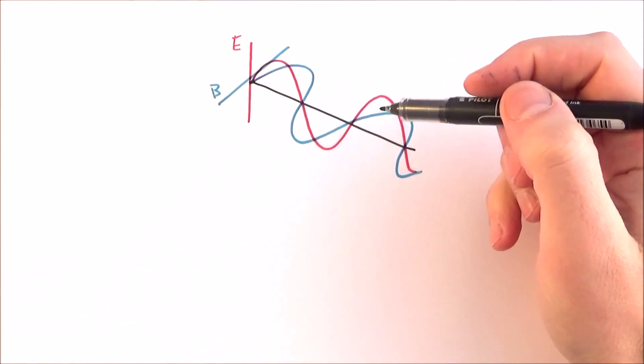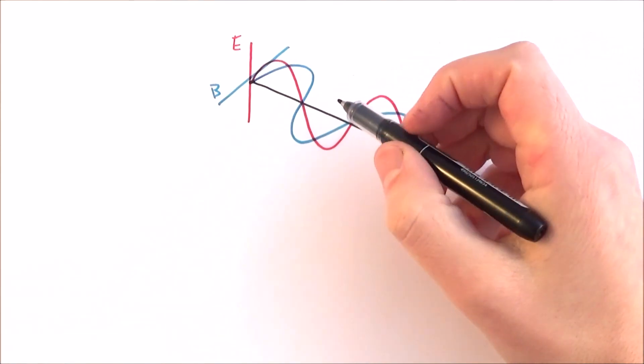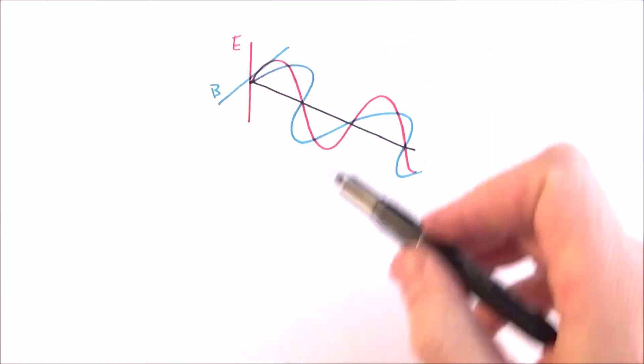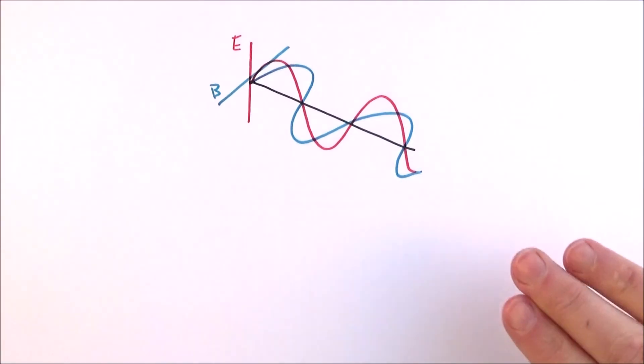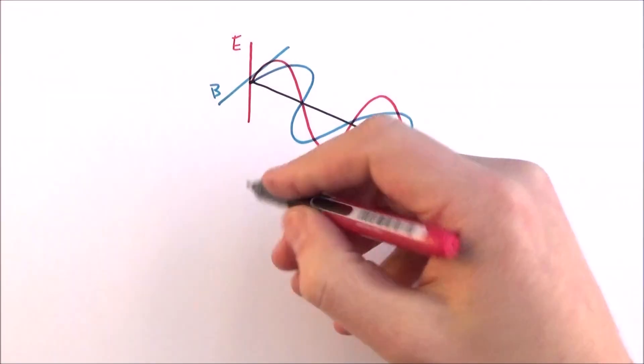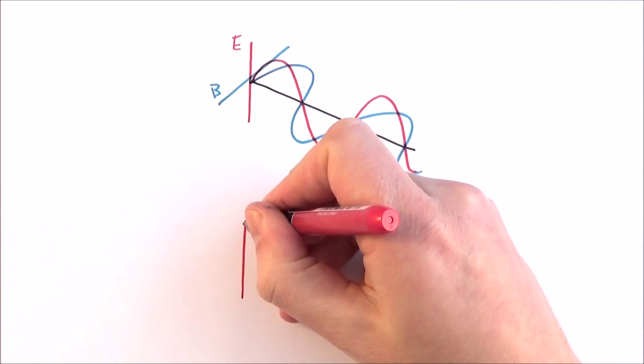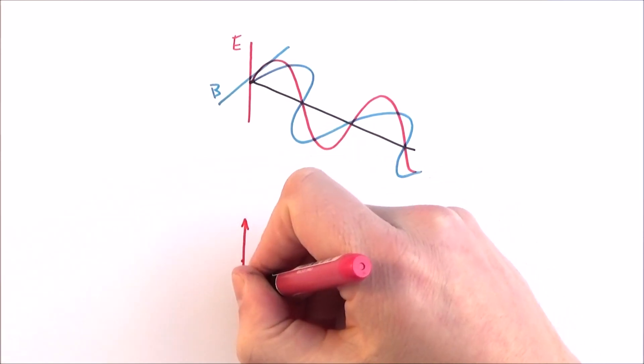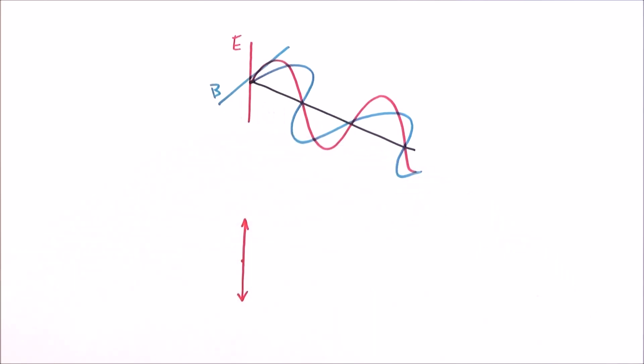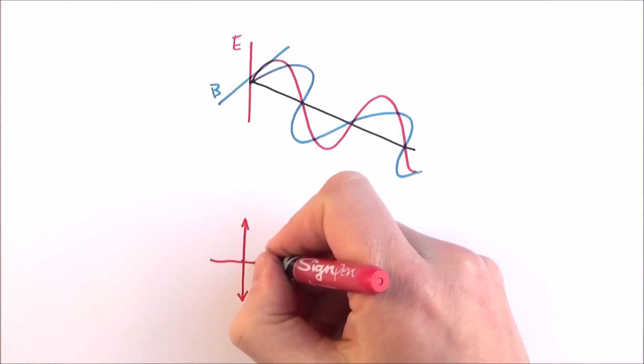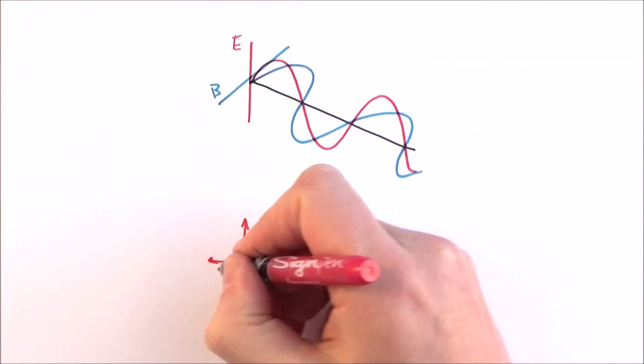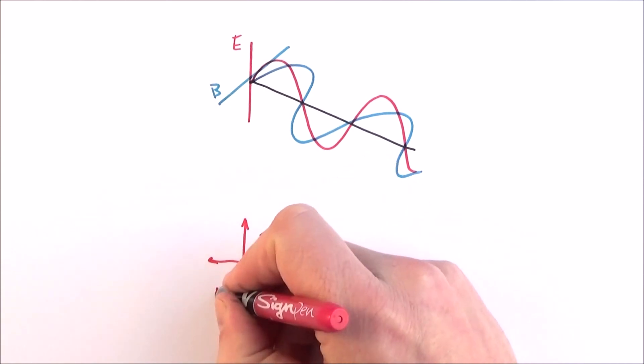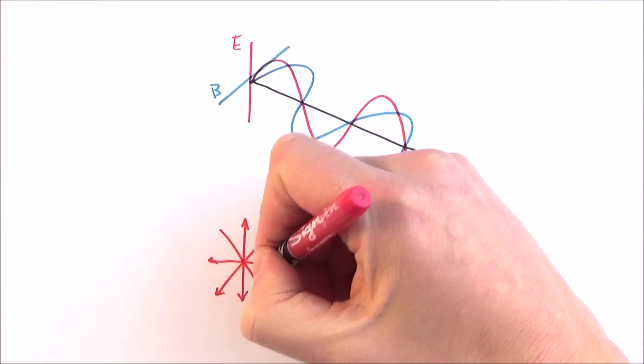From an electromagnetic wave, I'd like to consider the electric fields only. If we look head-on at this wave, we see that some of the electric fields are vibrating up and down, but there are also waves vibrating side to side and at all different angles. What we can say here is that the light is unpolarized.